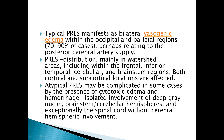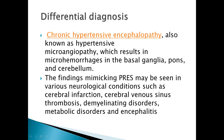If the clinical history is characteristic, you may consider the possibility of atypical PRES. Differential diagnoses include chronic hypertensive encephalopathy — also known as hypertensive microangiopathy — where the main findings are microhemorrhages in the basal ganglia, pons, and cerebellum seen on SWI. Other conditions that can mimic PRES include cerebral infarction, cerebral venous thrombosis, demyelinating disorders, metabolic disorders, and encephalitis.